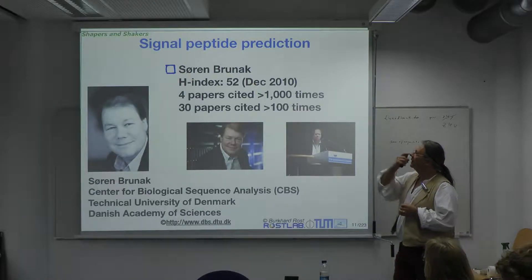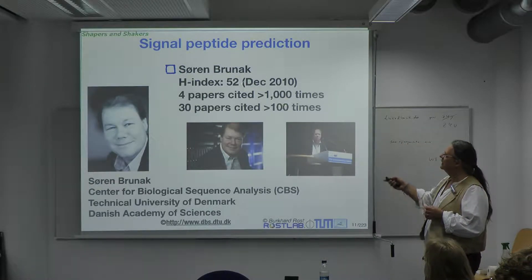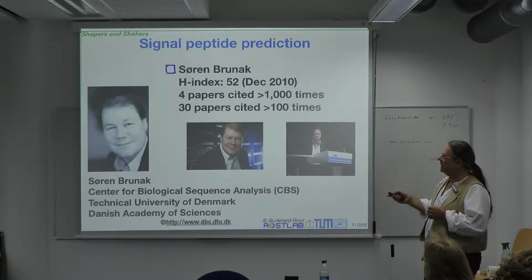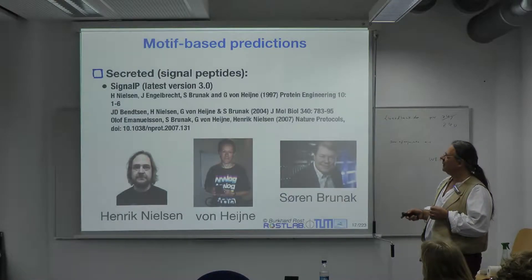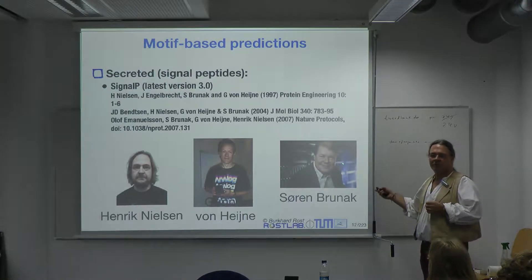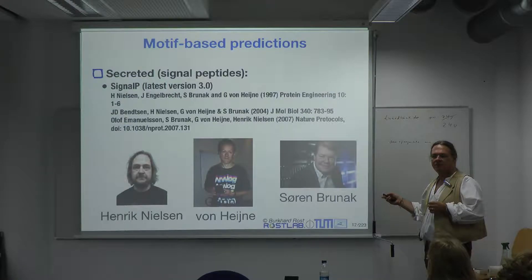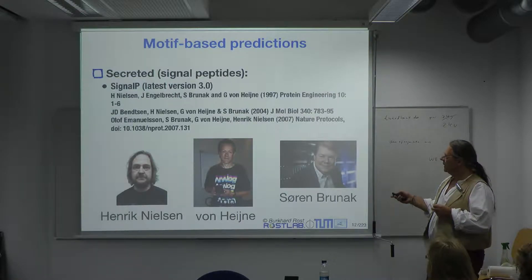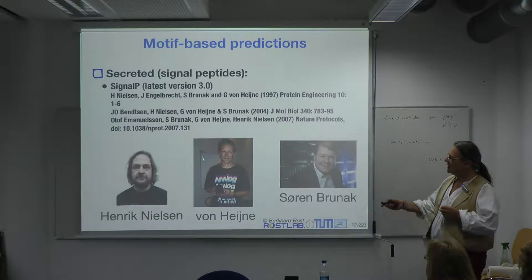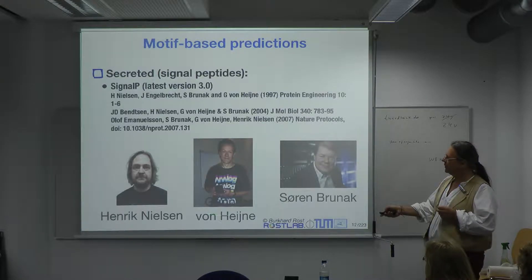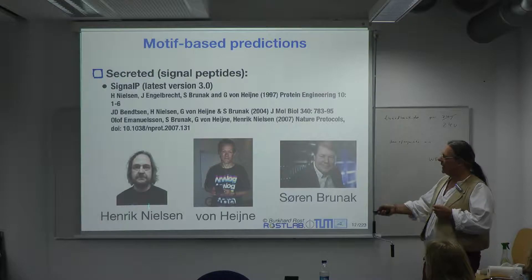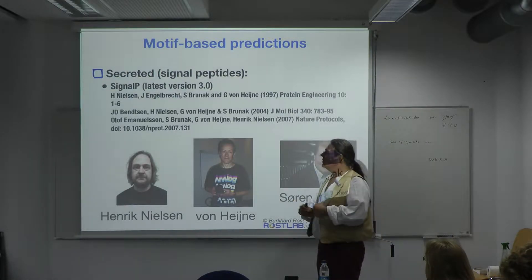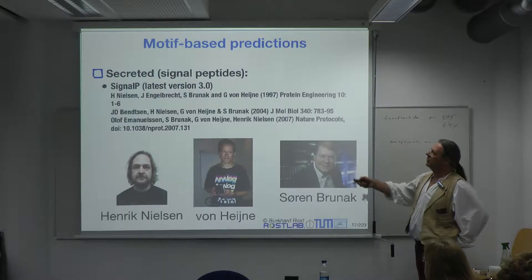This is Sven Brunak, another shaper and shaker — h-index of 52, many highly cited papers. Many of those are what I'm going to present: it's SignalP. Brunak is known for his machine learning skills; he is at CBS Copenhagen. Henrik Nielsen collected the datasets and brought the two worlds together — the experimental biological background and modern machine learning — and worked out a method called SignalP.